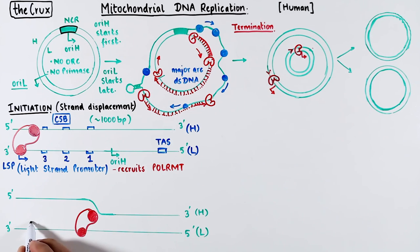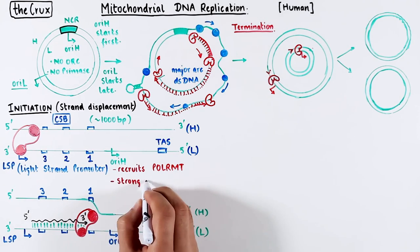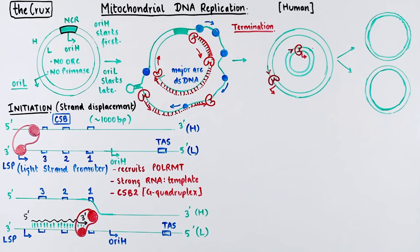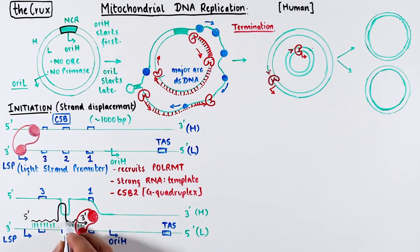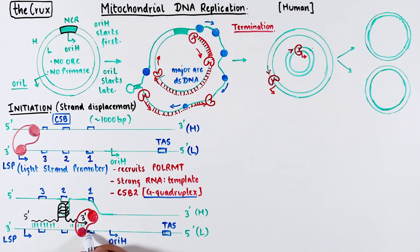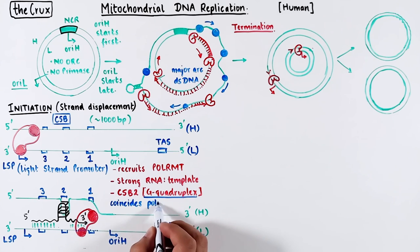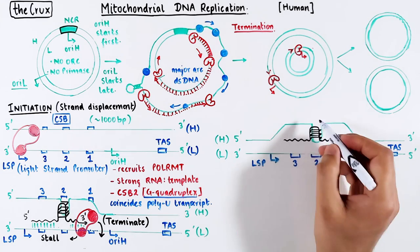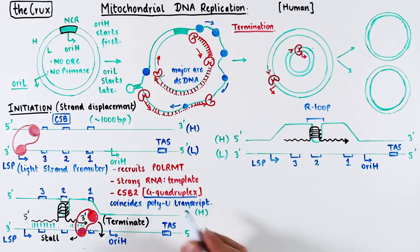Something funny happens during this transcription: the RNA that is made strongly binds to the template instead, forming an RNA-DNA hybrid. The CSB2 on the H strand contains a G-rich sequence that can form G-quadruplexes — remember, the H strand is rich in guanines. The RNA made on the L strand is also G-rich, so both RNA and the H strand DNA come together at CSB2 to form a hybrid G-quadruplex. This causes RNA polymerase to stall near CSB1 at a poly-U region and eventually terminate transcription, leaving the transcribed RNA stuck in this G-quadruplex structure, also called the R-loop.